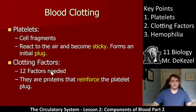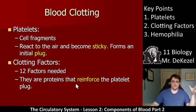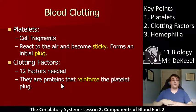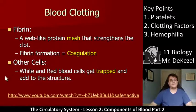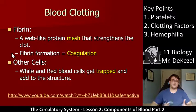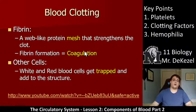Key point two: there are twelve clotting factors, and they are proteins that jump in and reinforce the platelet plug. They all have different jobs — some may act like glue, others like anchors — but they essentially latch onto platelets and help with the formation of the clot. We then have fibrin, which is a mesh or web-like protein that strengthens the clot and holds it in place. When fibrin is present, we call that coagulation.